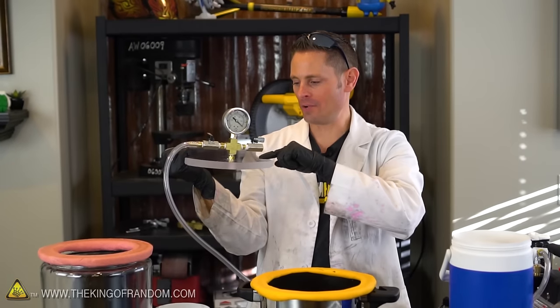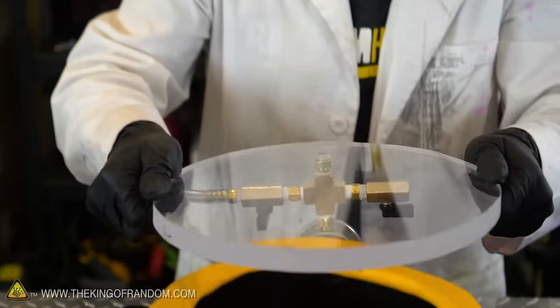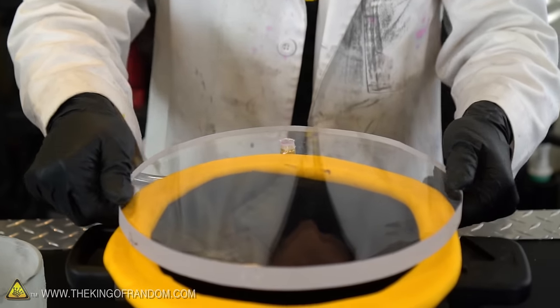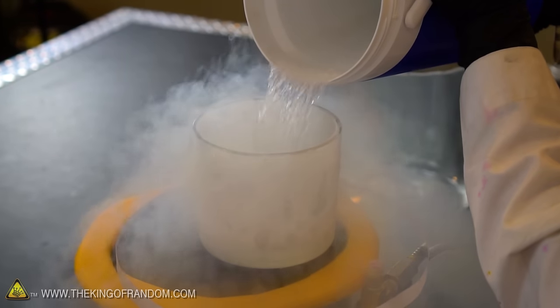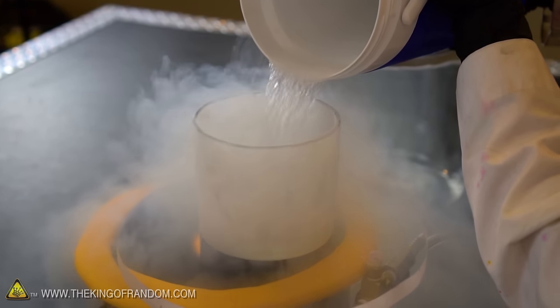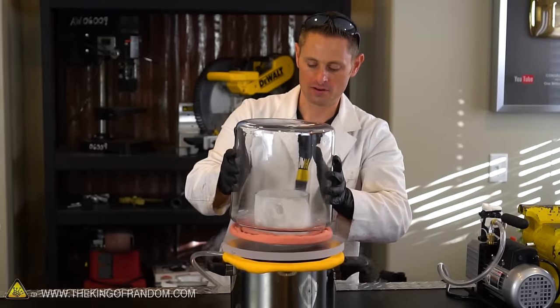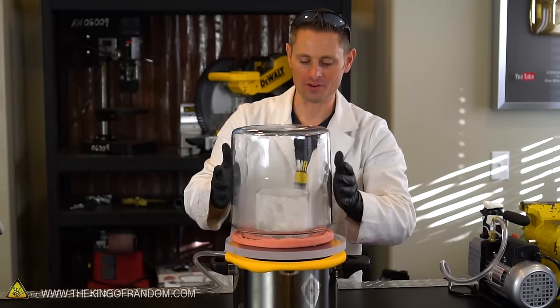I flipped the gauge around on my vacuum chamber so that when we place it upside down, we can still get a visual readout. Now we can take our little dish, fill it up with liquid nitrogen right in the center, go ahead and attach our vacuum chamber, and turn the pump on.